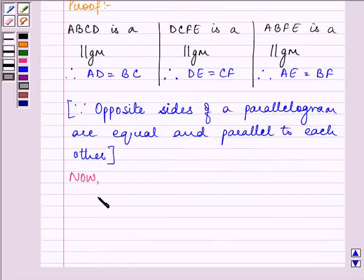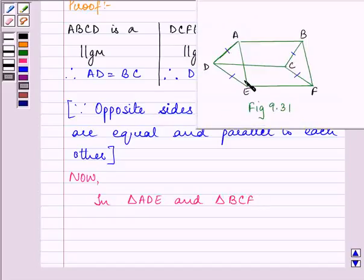Now, in triangle ADE and BCF, triangle ADE and BCF, these two triangles which are shaded we are talking about.